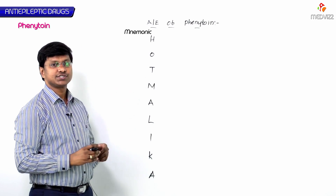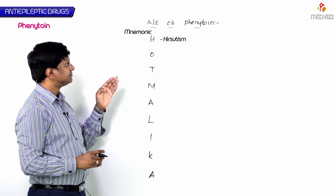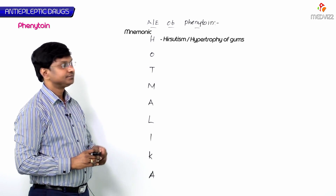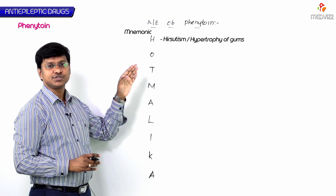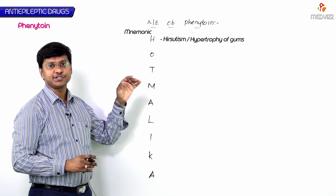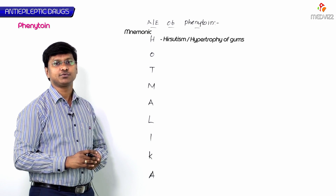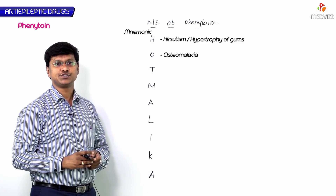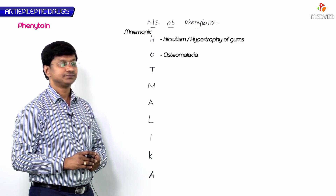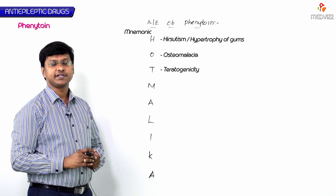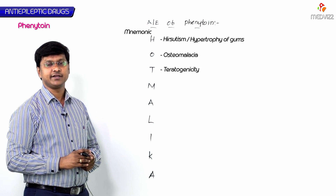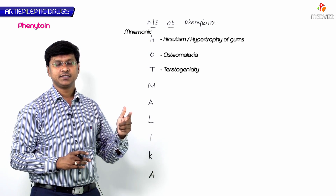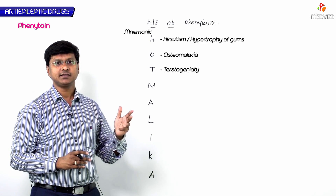H stands for Hirsutism and gum Hypertrophy (due to overexpression of PDGF). O stands for Osteomalacia (due to vitamin D deficiency). T stands for Teratogenicity — fetal hydantoin syndrome including hypoplastic phalanges, microcephaly, cleft palate, and cleft lip.